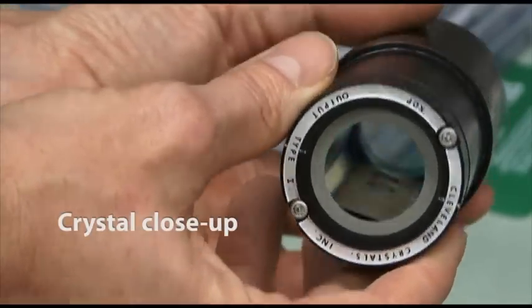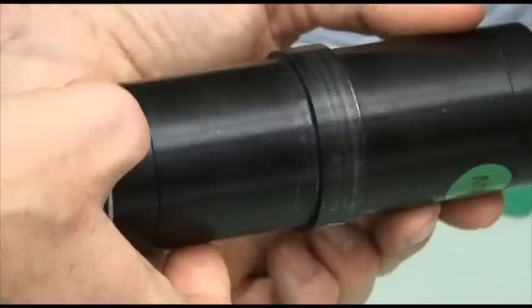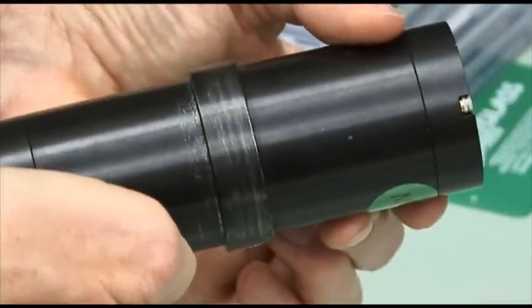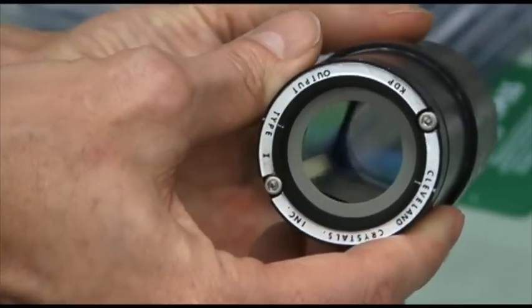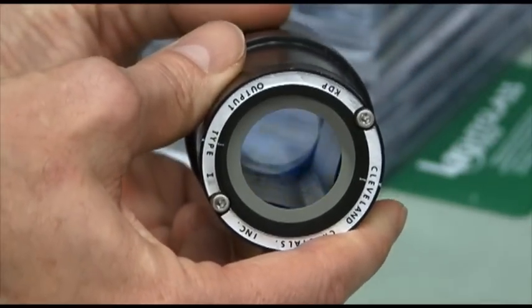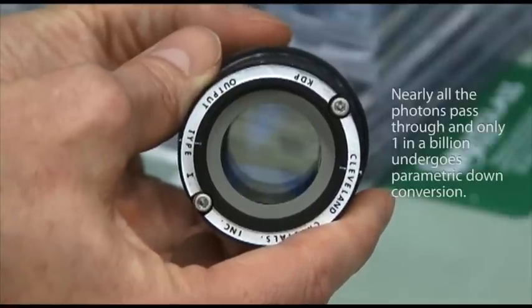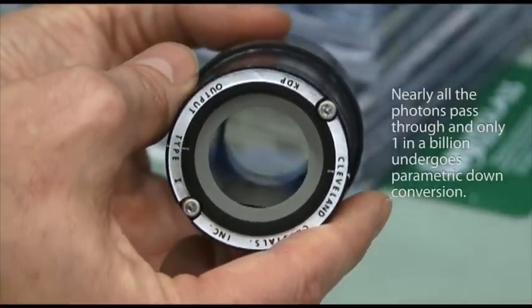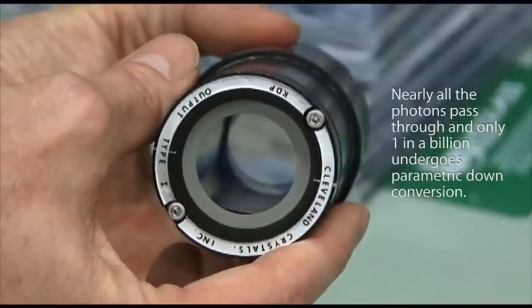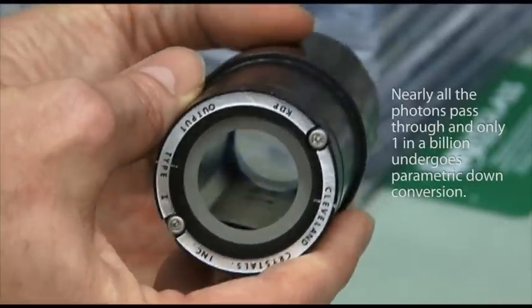So here's an example of this, one of these nonlinear crystals. In this case, this is a 100 millimeter long crystal. It's particularly long. But you can see that you can see through it. And it's pretty much clear, which jives with the fact that the nonlinearity is relatively low, in that only one in a billion photons that come through gets scattered. Or in fact, it could even be less.